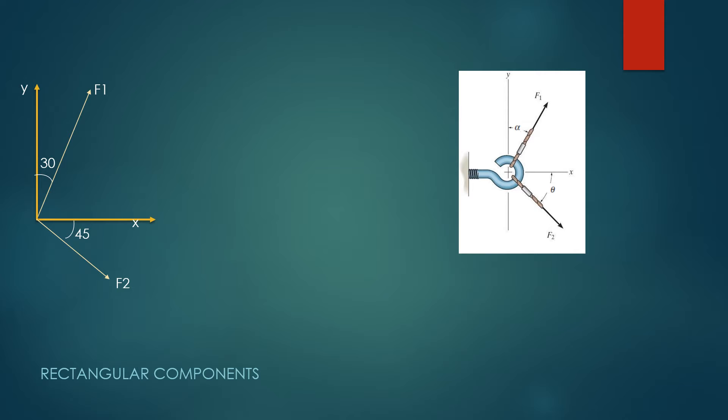Using the parallelogram rule, the resultant force can be vector R that has angle theta 1 and theta 2 with x and y axes.